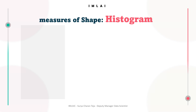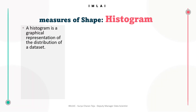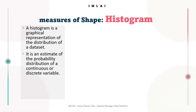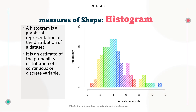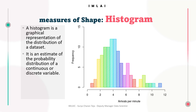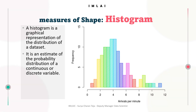Let's look at the example on the right side of the screen. To reiterate: a histogram is a graphical representation of the distribution of a data set, and it is an estimate of the probability distribution of a continuous or discrete variable. In a histogram, data is divided into a set of bins or intervals, and the number of data points that fall into each bin is represented by the height of a bar. The bins are represented on the x-axis, while the frequency or count of data points is represented on the y-axis.